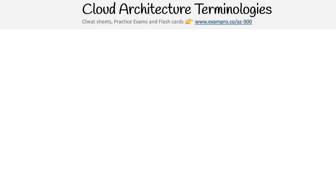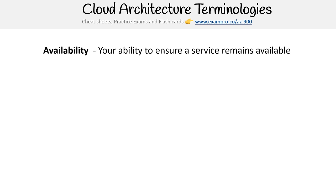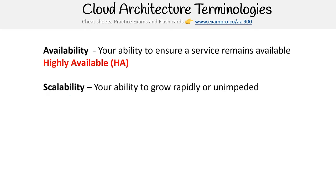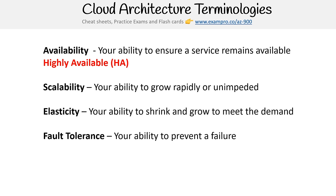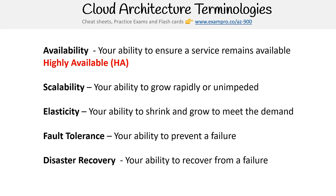We're looking at cloud architecture terminologies, which help you conceptualize the advantages of the cloud. Availability is your ability to ensure a service remains available — known as high availability or HA. Scalability is your ability to grow rapidly or unimpeded. Elasticity is your ability to shrink and grow to meet demand. Fault tolerance is your ability to prevent a failure. Disaster recovery is your ability to recover from a failure, known as high durability or DR.